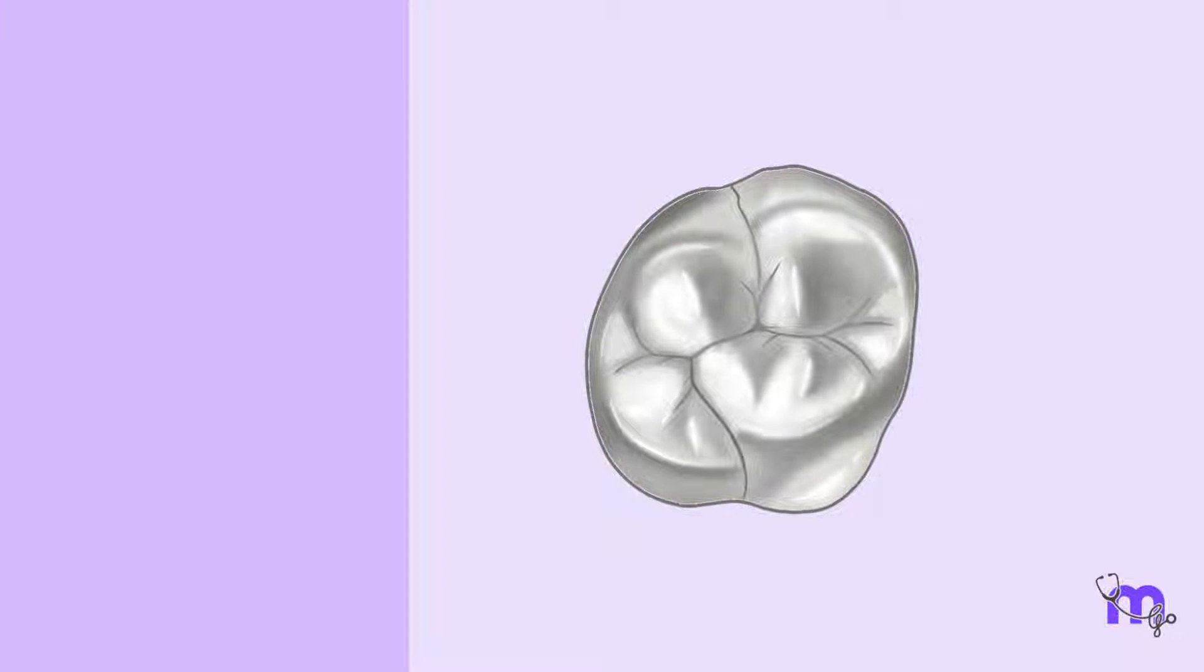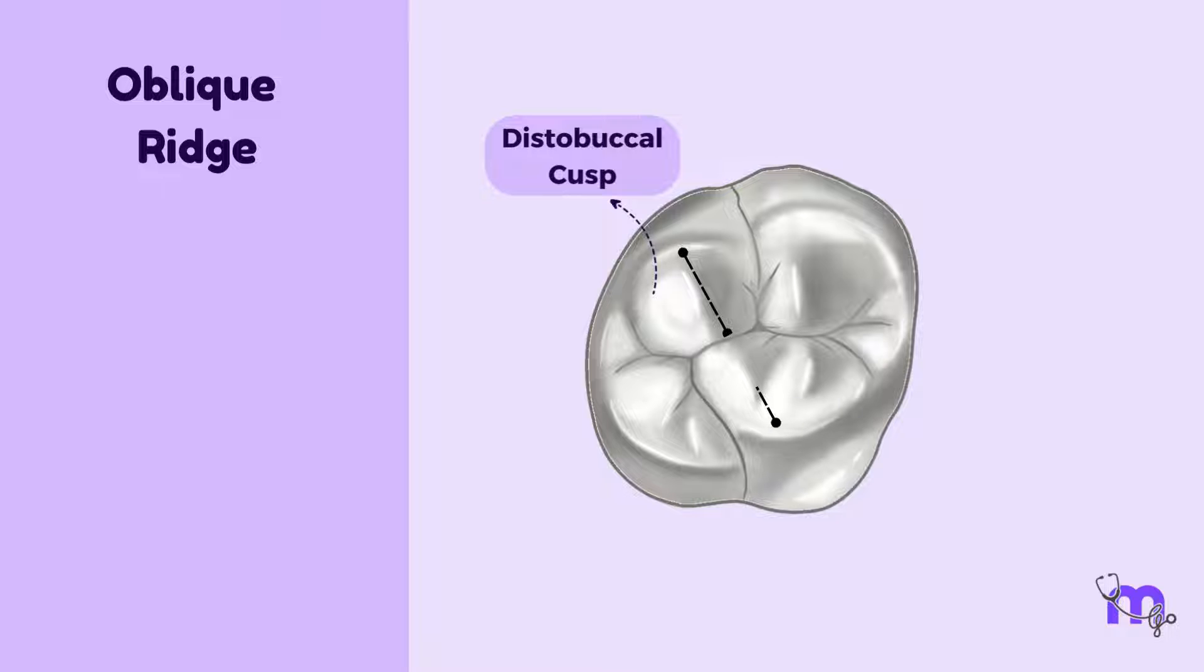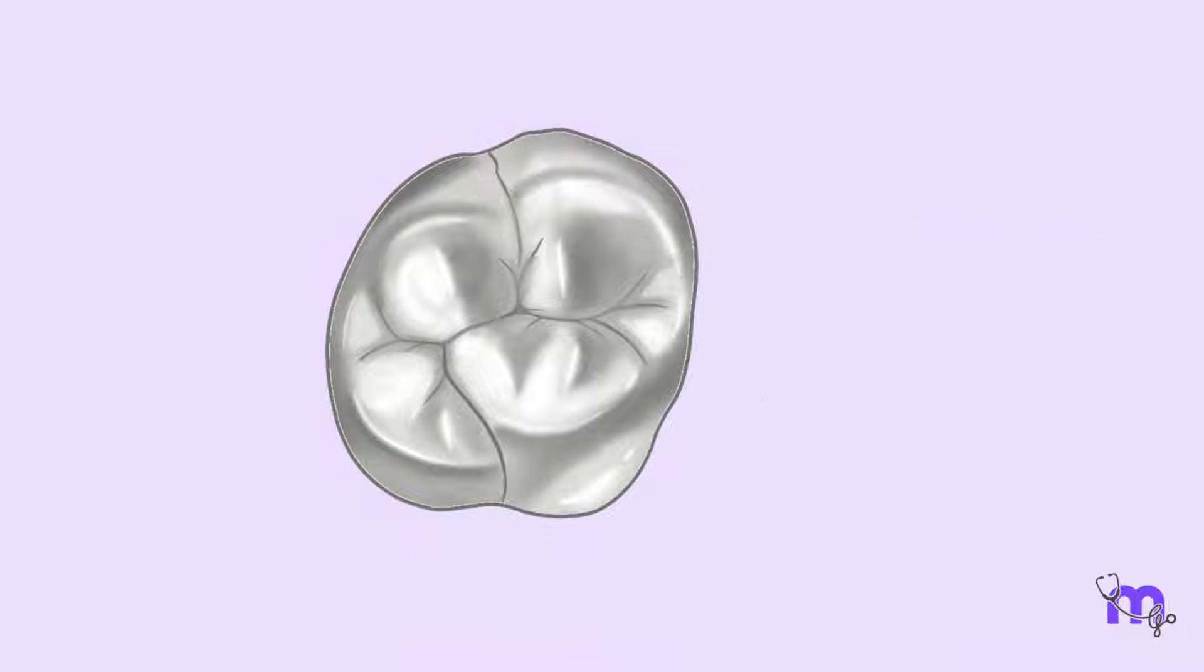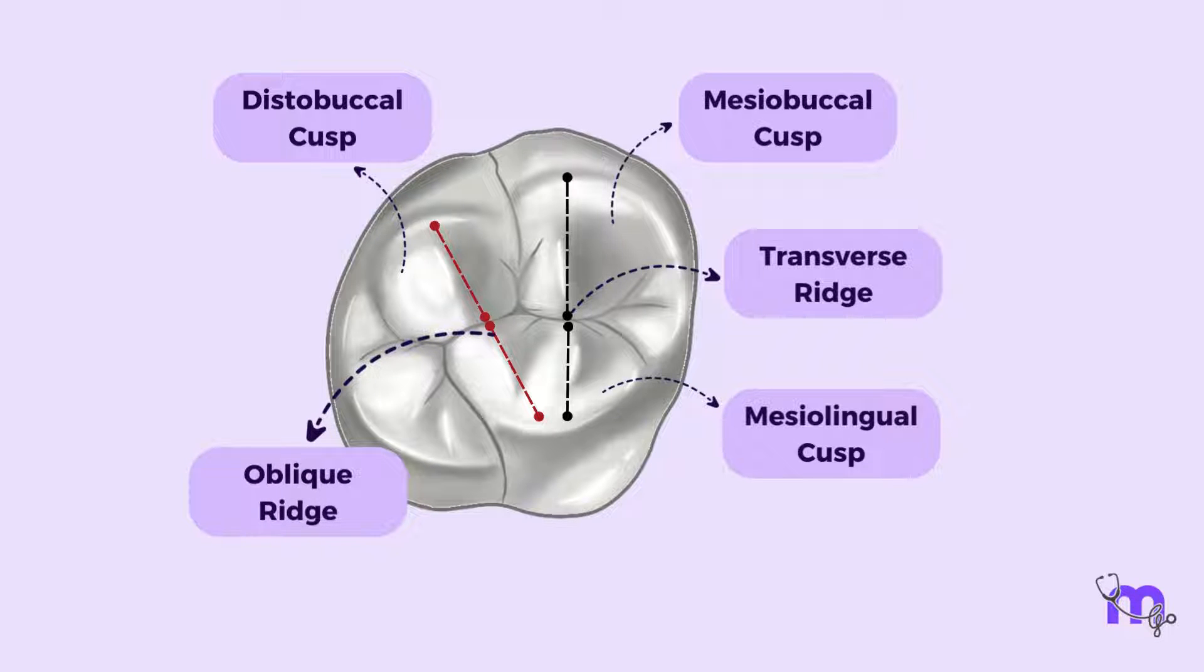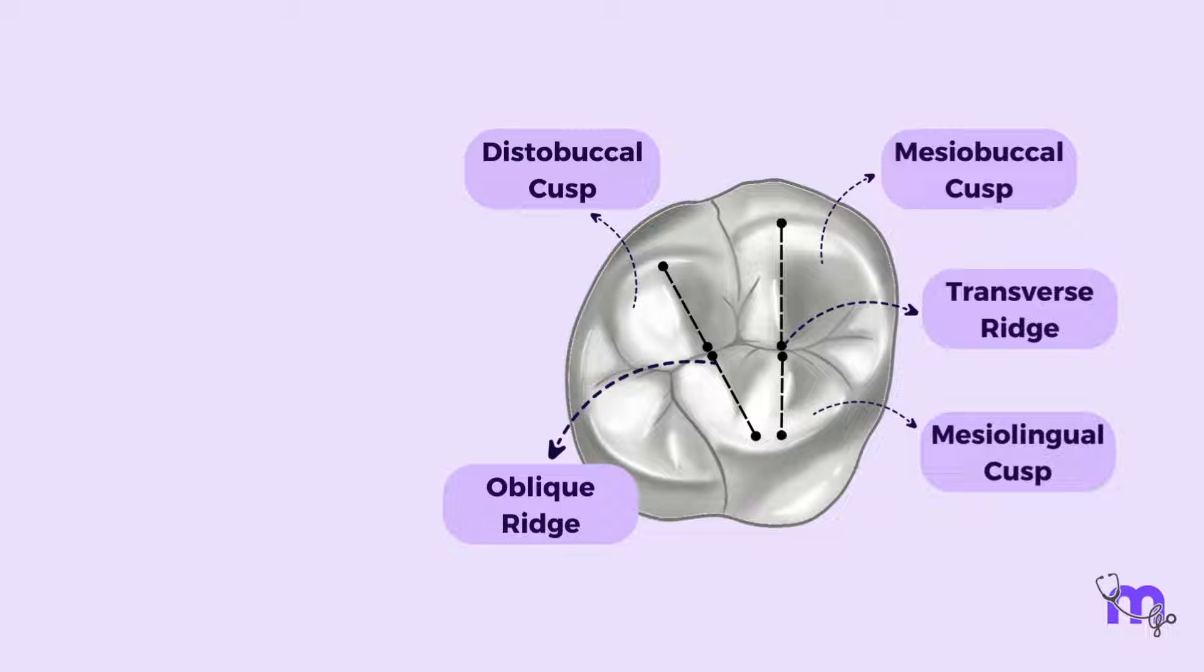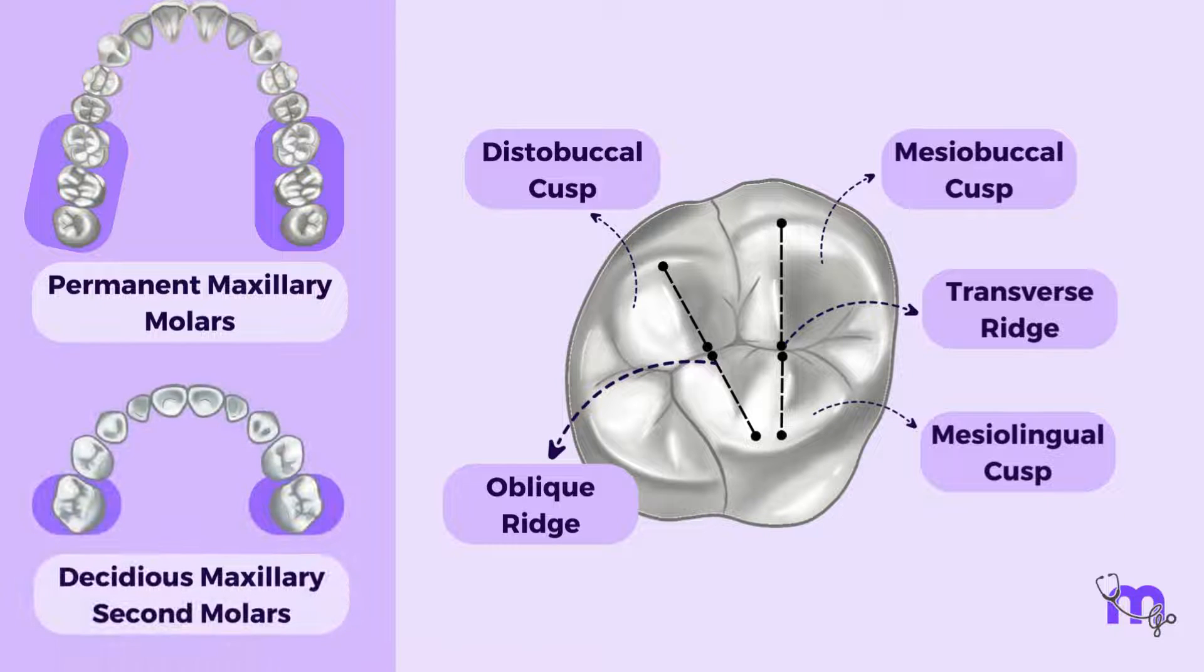We also have another confluence of triangular ridges called the oblique ridge. The triangular ridge of the distobuccal cusp meets the distal triangular ridge of mesiopalatal cusp to form this oblique ridge. Pay attention to the fact that this is a unique feature specific to the maxillary molars. Now we discussed that the mesiolingual cusp has two triangular ridges, one mesial and one distal. The mesial one meets the mesiobuccal cusp triangular ridge to form the transverse ridge. The distal ridge of the mesiolingual cusp meets the triangular ridge of the distobuccal cusp diagonally. The resultant ridge crosses obliquely across the occlusal surface. This is a single identifying feature for the permanent maxillary molars as well as the deciduous maxillary second molar.